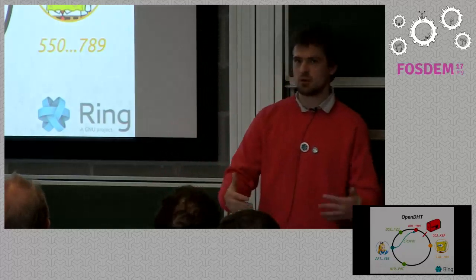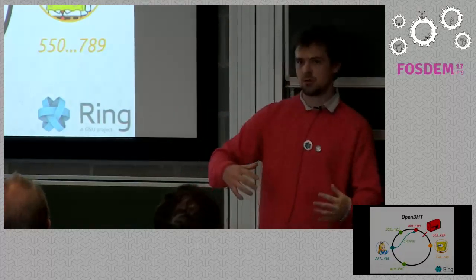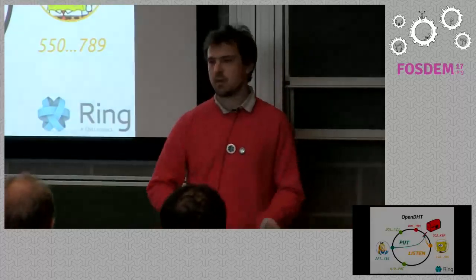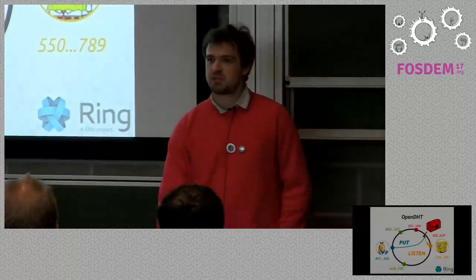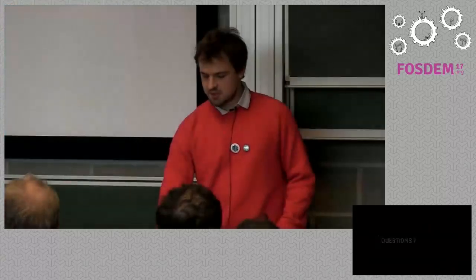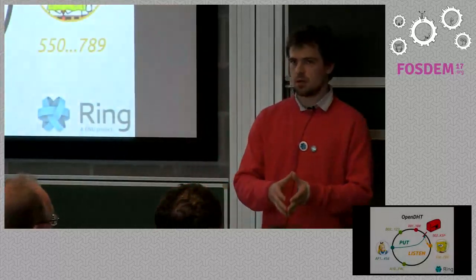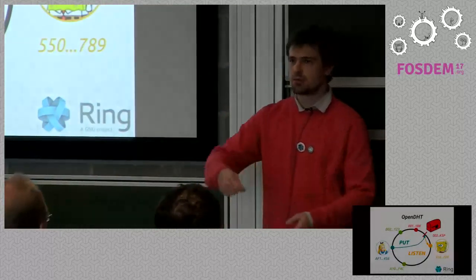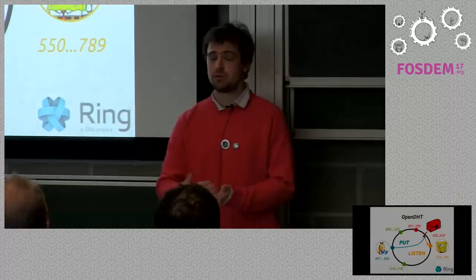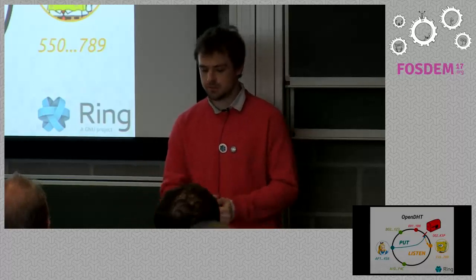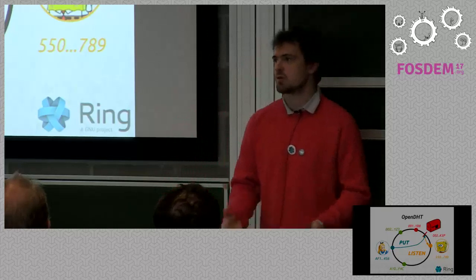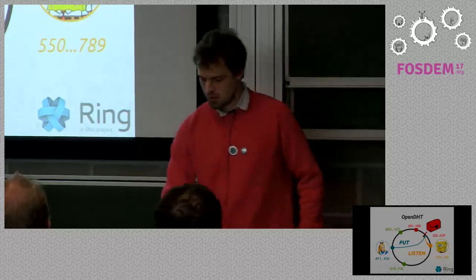Every node knows some parts of the network — the nodes that are closest to that node's own ID. You then ask other nodes iteratively, asking the closest node you know to the target ID until you reach the target. The node answers you with the list of nodes closest to the target ID. This is similar to the technology used by BitTorrent to find peers.